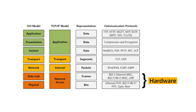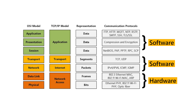These protocols are implemented using programming languages as software code, or even as hardware designs such as microchips. For example, the physical and data link layers are usually implemented as hardware chips or on an FPGA. The network and transport layers are usually implemented in software, but they can also be implemented in hardware when low latency is required. The same also applies to the session, presentation, and application layers — usually implemented in software, but can also be implemented in hardware such as on an FPGA or a chip.